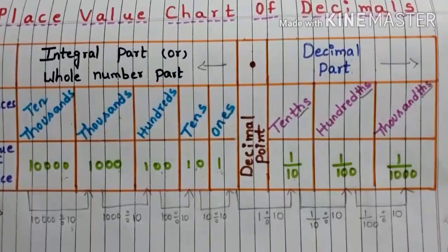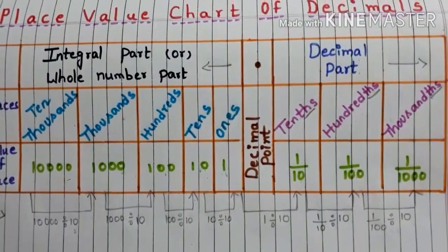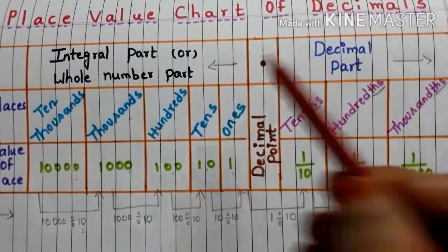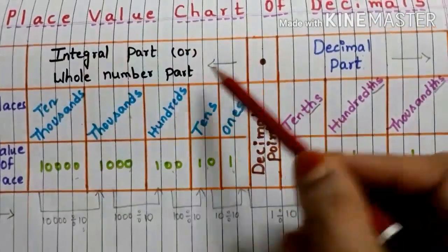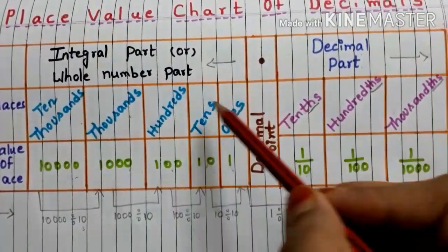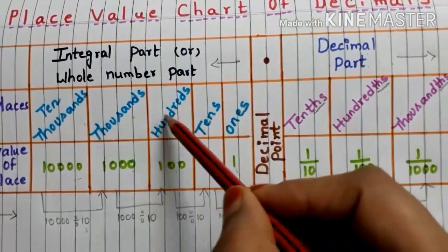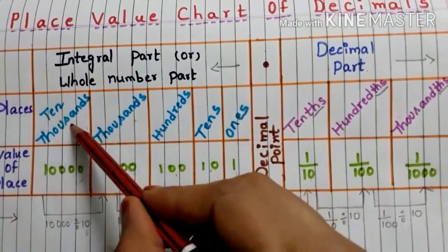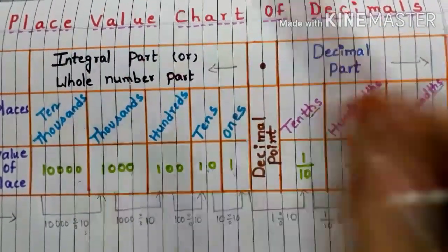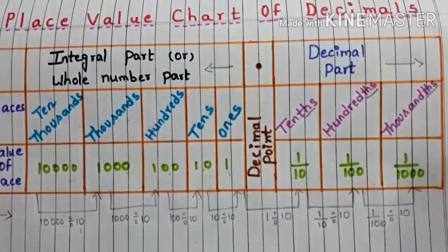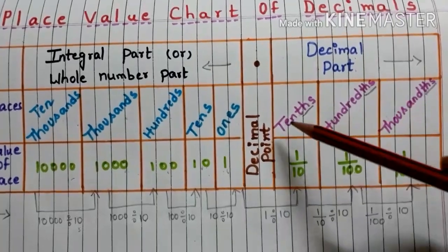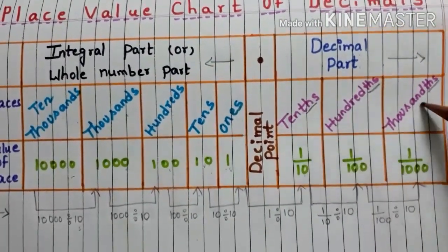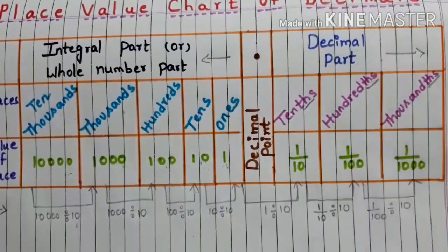Let us repeat the places and place values. The whole number part: 1's, 10's, 100's, 1000's, and 10,000's. Coming to the decimal part: tenths, hundredths, and thousandths.